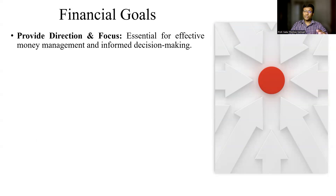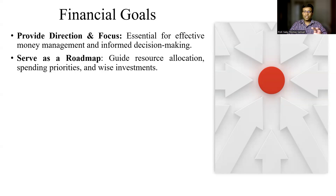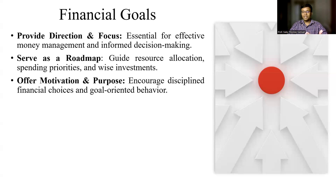Let's talk about financial plans and why each and every individual must possess one. Financial plans provide us with a sense of direction and focus — they are an effective methodology when it comes to money management, and they help ensure that the decisions we are taking are informed. When we have financial goals in place, these goals help us have roadmaps. For example, after three years you want to buy a vehicle, after 10 years you want to buy your own house, and maybe after 15 years you want to go for higher studies. Based on these roadmaps, we are able to allocate sufficient resources and make appropriate decisions. Good financial goals give us a sense of discipline, ensuring that our spending, savings, and investments all happen in a goal-oriented manner.